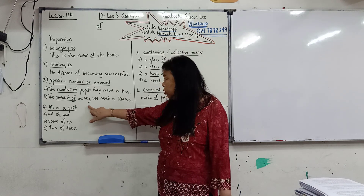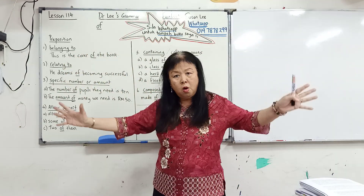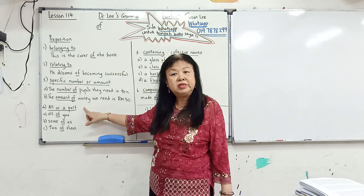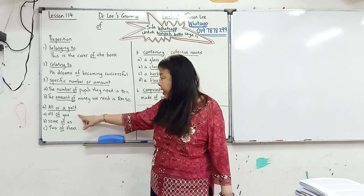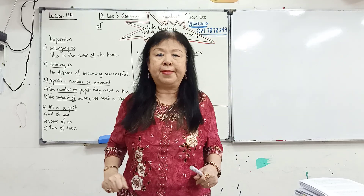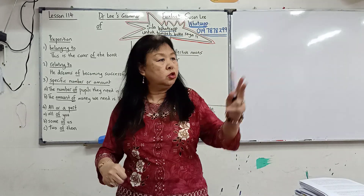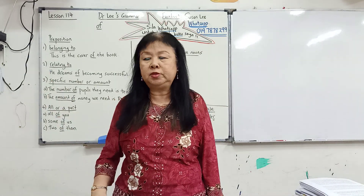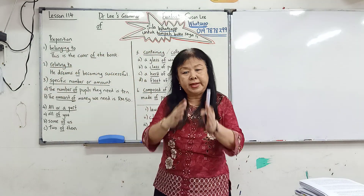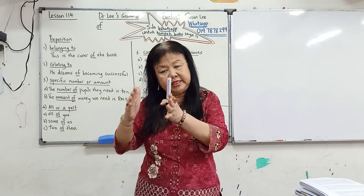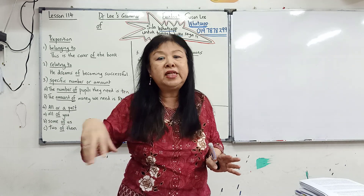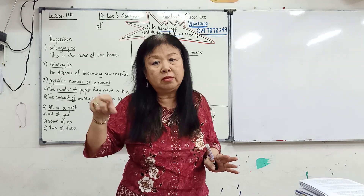You can also use 'of' with 'all' or a part of something. For example: all of you, some of them, some of us, two of them, three of them. Again, you can see it's within a big group, but referring to a certain number, a certain amount, or a part. Then you use 'of'.